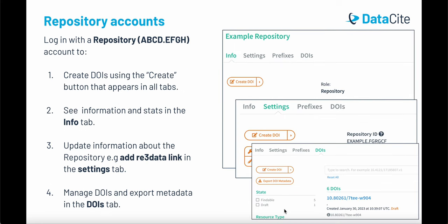When you log into Fabrica with a repository account, you'll have permission to create DOIs using the create button that appears on the left-hand side in all tabs. You can also see information and stats in the info tab, update information about the repository like adding the RE3 data link in the settings tab, and manage and update DOIs and export metadata in the DOIs tab.